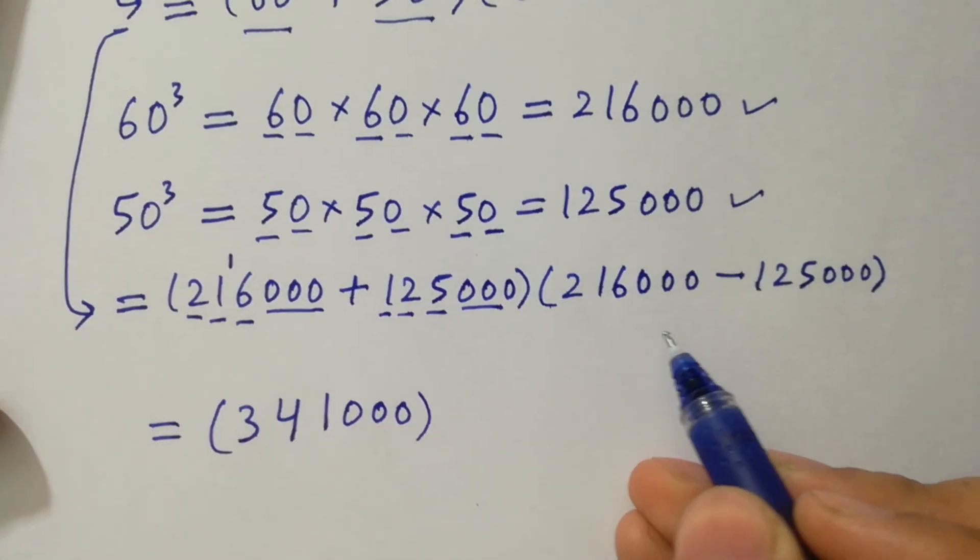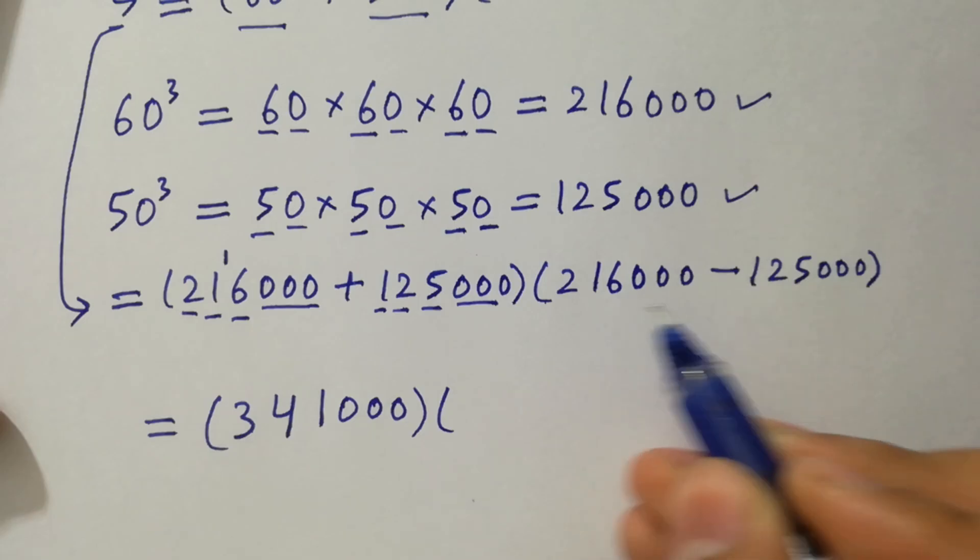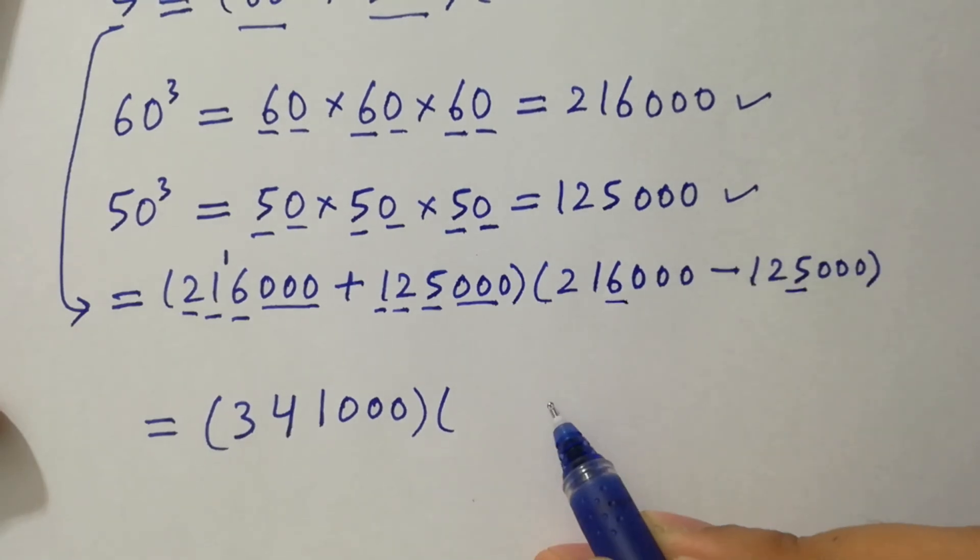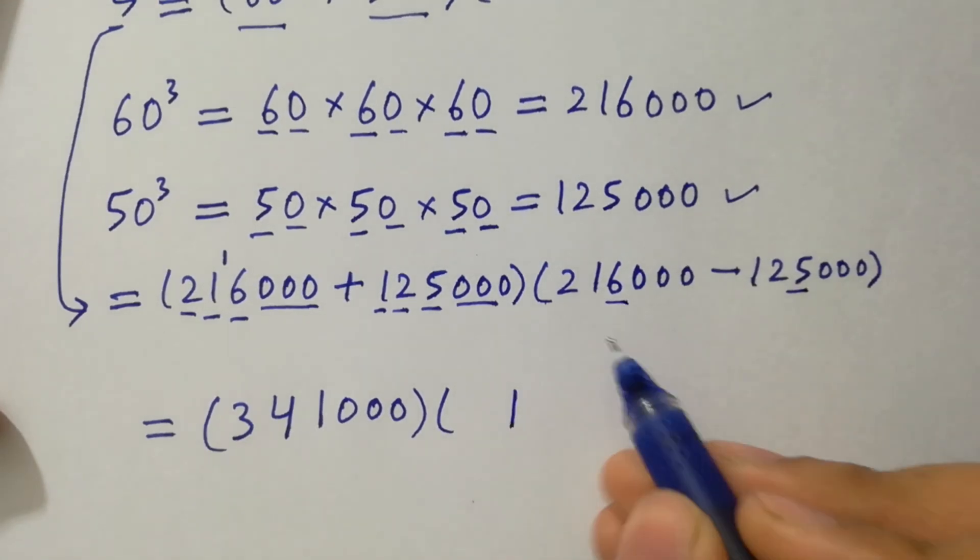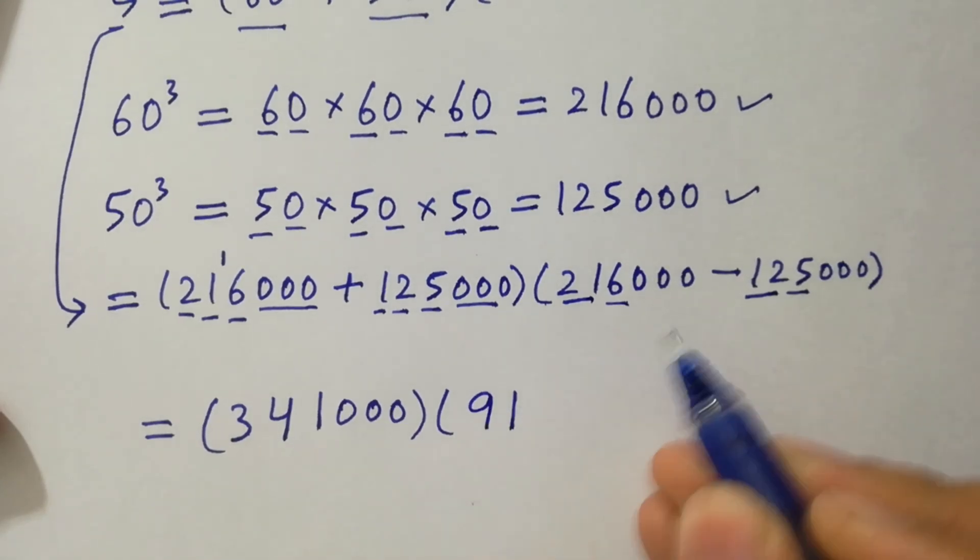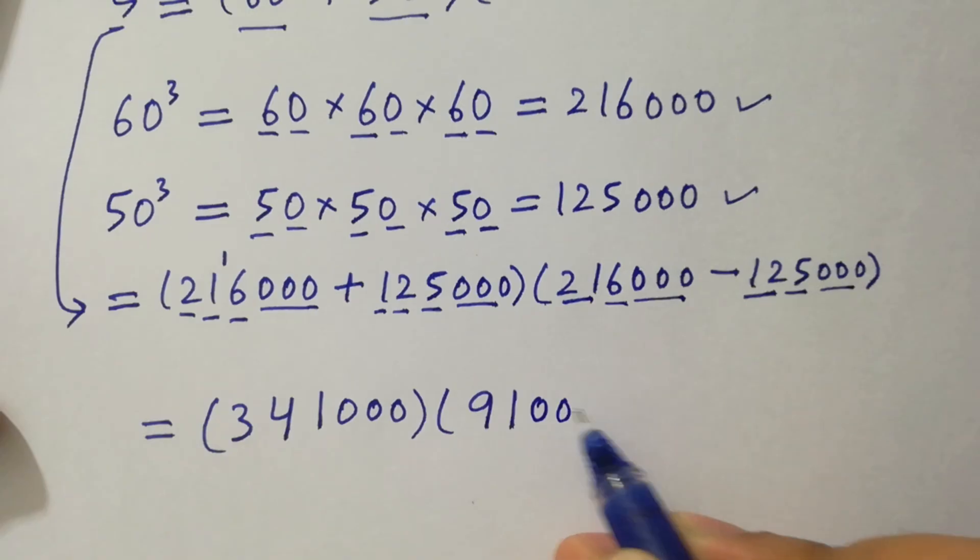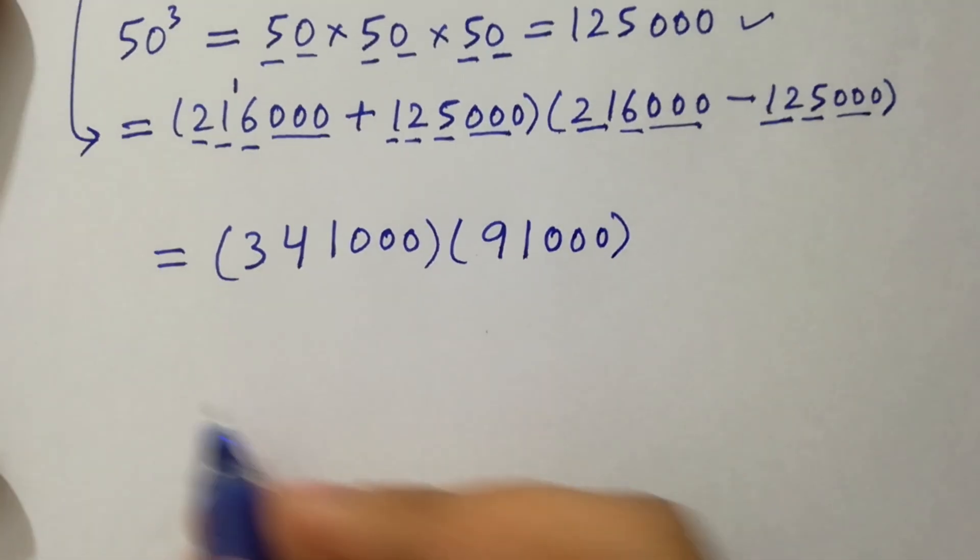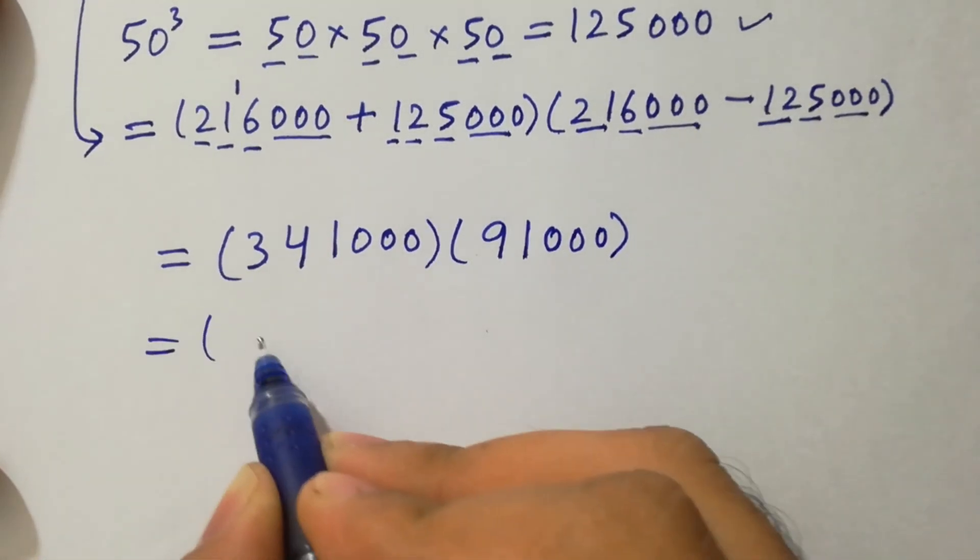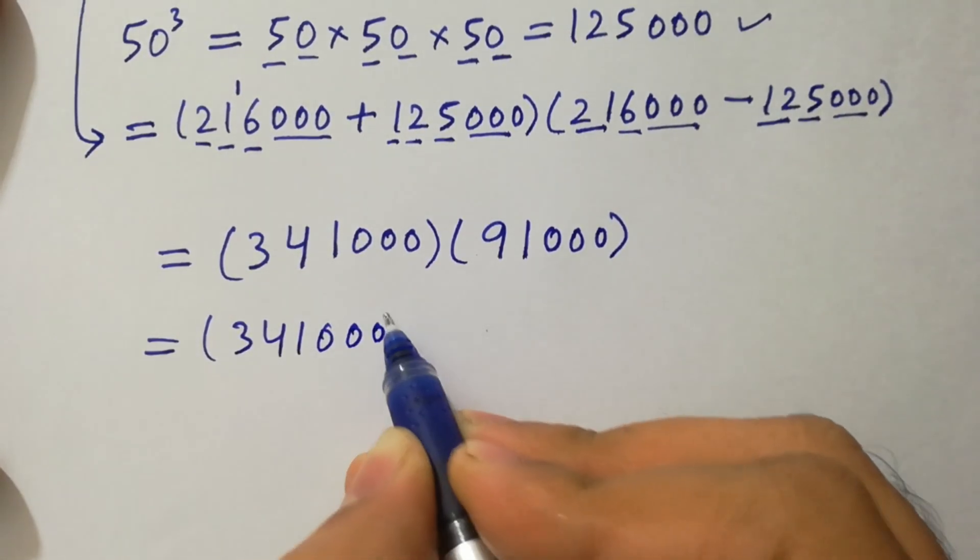Now subtract them here. You can see here 6 minus 5 is 1 and 21 minus 12 is 9. Now we have 3 times 0. Here we have 3 times 0, next 3 times 0, next 3 times 0. 341,000 as it is.